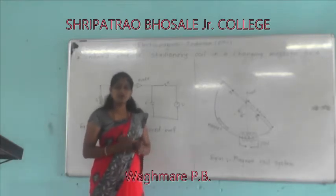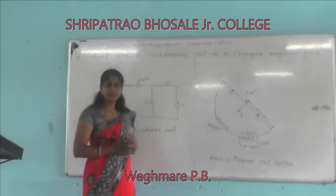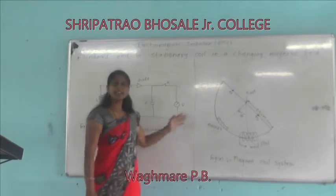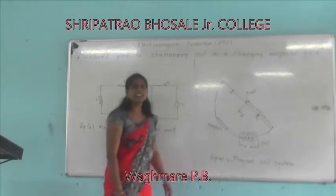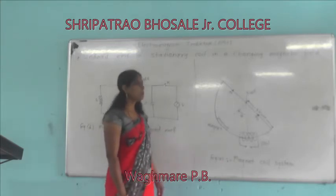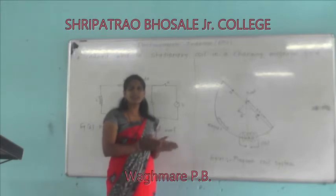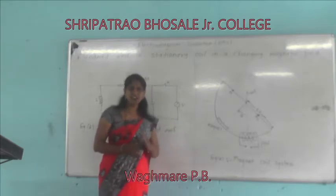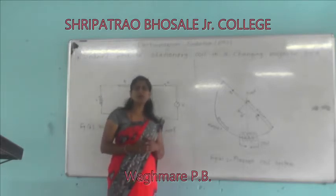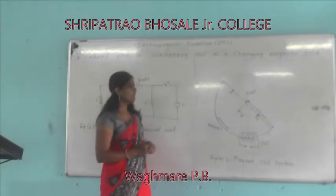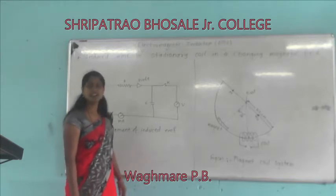By Faraday's law, we have already learnt about induced EMF. In this lecture, we will discuss about the induced EMF in a coil where the coil is stationary and a magnet is moving towards the coil. By Faraday's law, E is equal to dΦ/dt, which means the change in magnetic flux with respect to time. The induced EMF is directly proportional to the rate of change of magnetic flux.